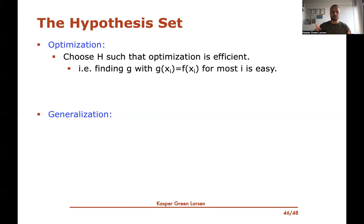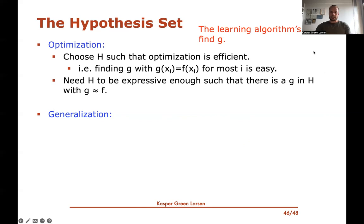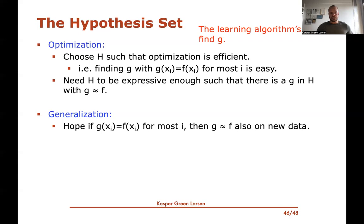We want to find a hypothesis that predicts the label correctly for most of the training data, and this should be fast to do in practice. It's the learning algorithm's task to find this G. We'd also like the hypothesis set to be expressive enough so that there's always a good hypothesis in there — because if you cannot even predict the labels of the training data correctly, what hope do you have of predicting the labels correctly on new data? The generalization part is that now we've found a hypothesis that does well on the training data, and we're hoping it also performs well when given new data.